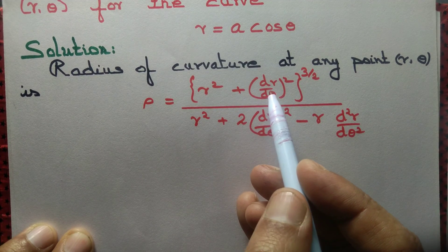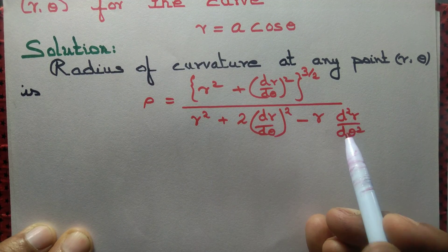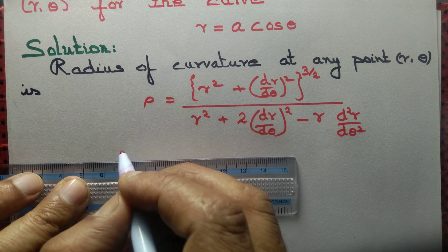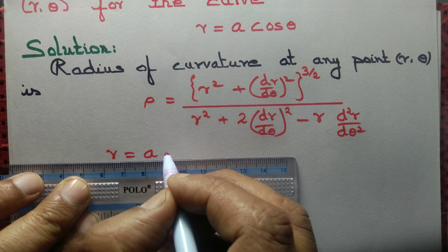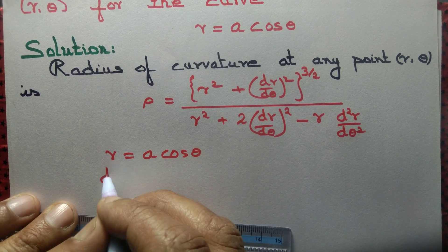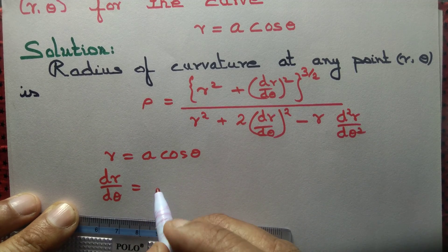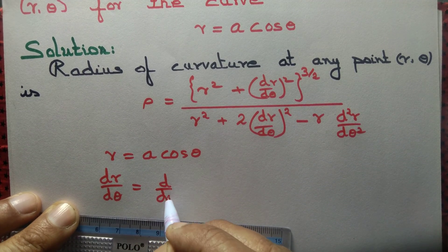Observe that we just need to compute dr by d theta and d²r by d theta square. Since r equals a cos theta, we differentiate both sides with respect to theta to obtain dr by d theta, derivative of a cos theta.